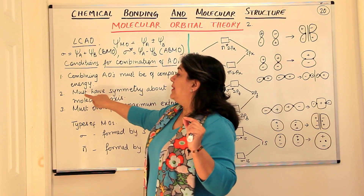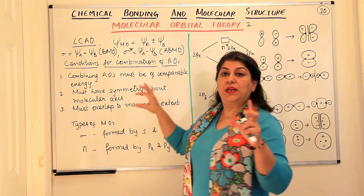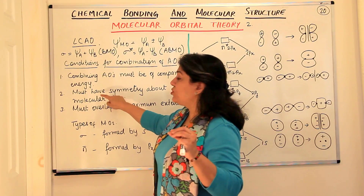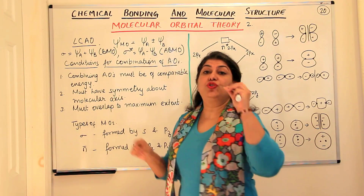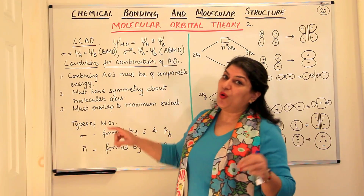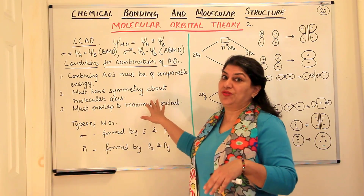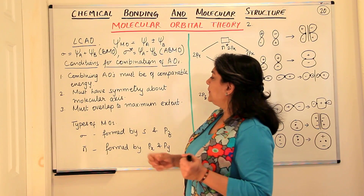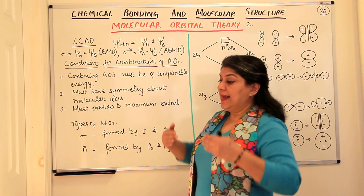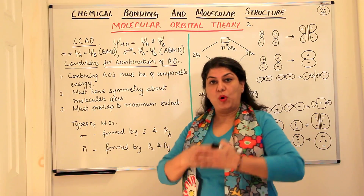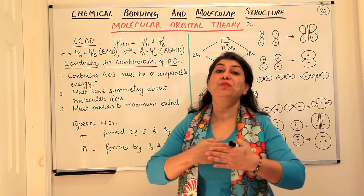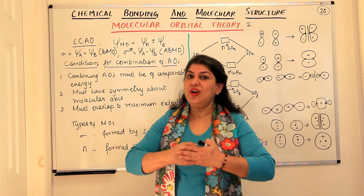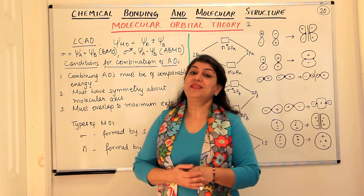So the conditions for the linear combination of atomic orbitals are that the combining atomic orbitals should not only be similar in their energies, they should also be similar in their symmetries—that is, their orientation should also be the same.